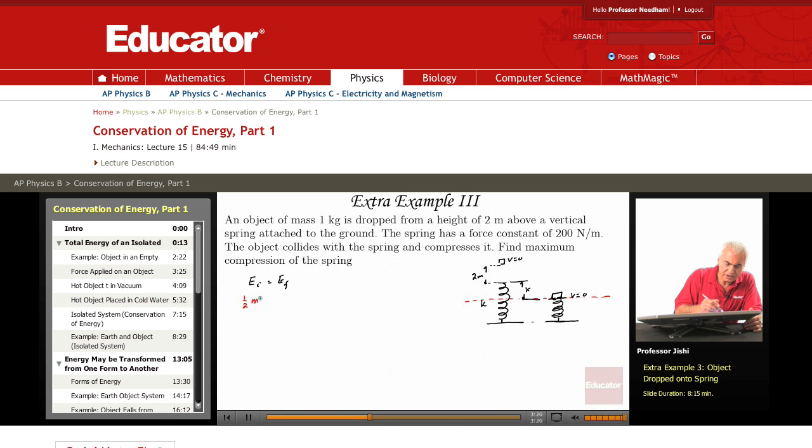So the initial energy, I get half MV_i squared, which is zero, plus MGH_i, which is MG times (2 plus x).